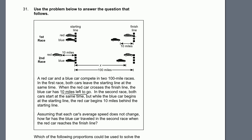Red car crosses the finish line, blue car has 10 miles left to go. In the second race, both cars start at the same time. But while the blue car begins at the starting line, the red car begins 10 miles behind the starting line. Assuming that each car's average speed does not change — that's a big assumption — so each car has the same average speed from race to race.